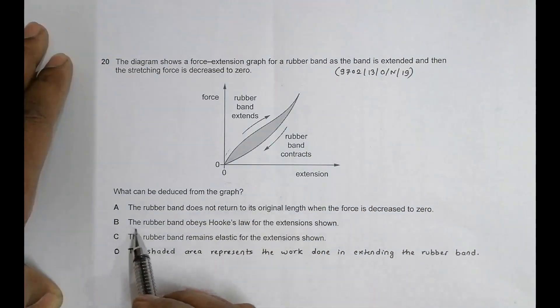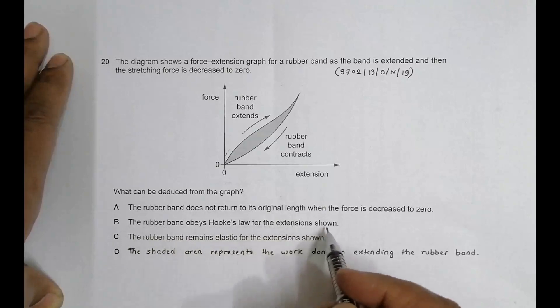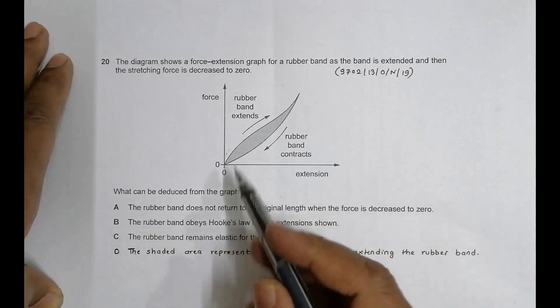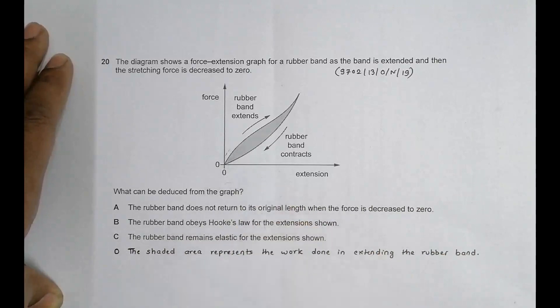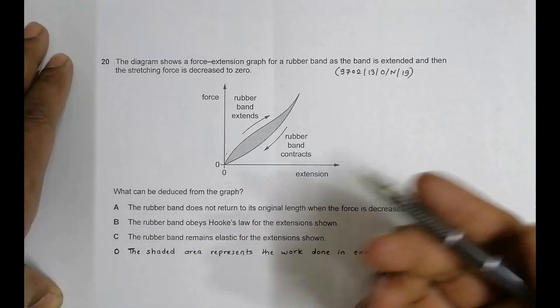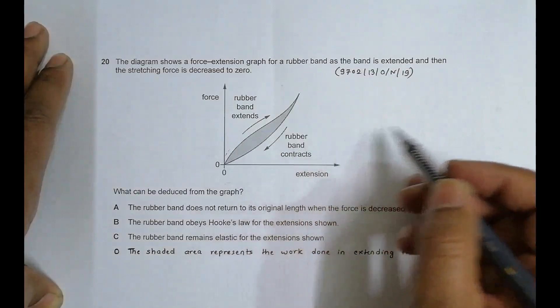Option B: The rubber band obeys Hooke's law for the extensions shown. This is not true because the graph is not a straight line. The force and extension are not proportional to each other, so it follows a curve path. This is also not true.